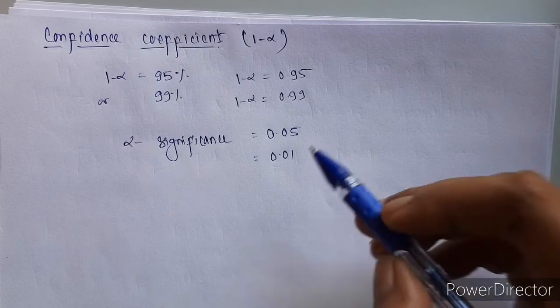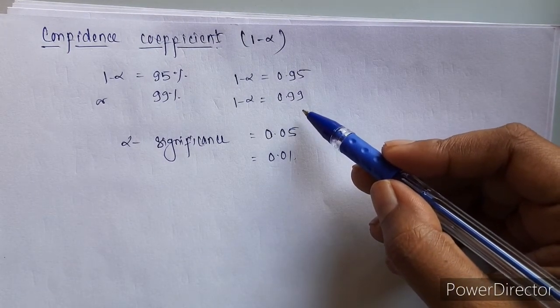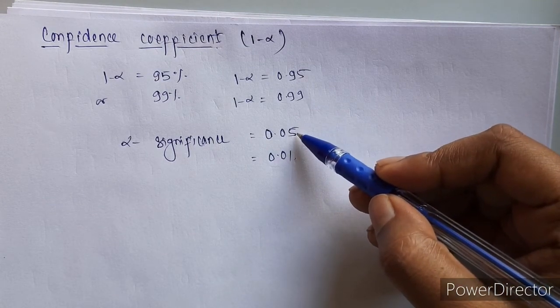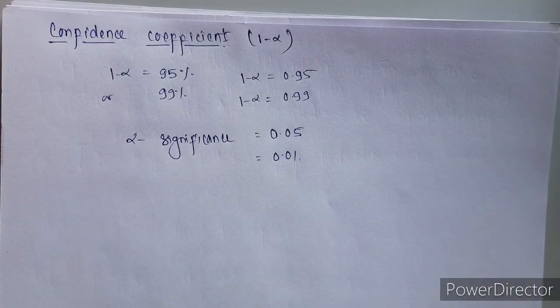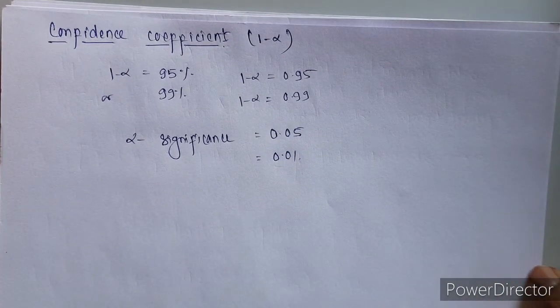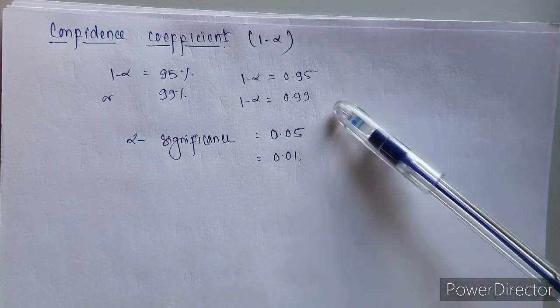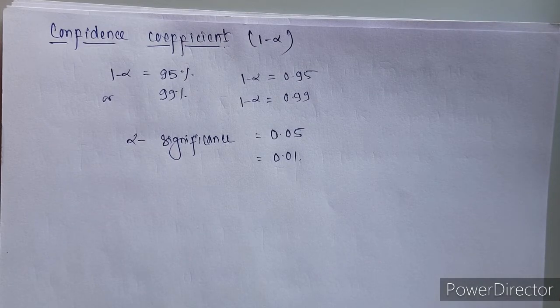So if 1 percent level of significance, then confidence will be 99 percent, that is 0.99. So basically we will be only using either 95 percent or 99 percent for calculating the values of parameters.